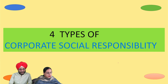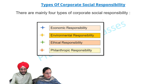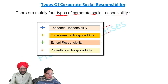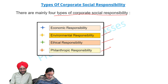4 Types of Corporate Social Responsibility. There are mainly 4 types of Corporate Social Responsibility: Economic Responsibility, Environmental Responsibility, Ethical Responsibility, and Philanthropic Responsibility. We will discuss each type of responsibility one by one.